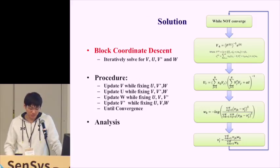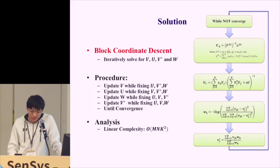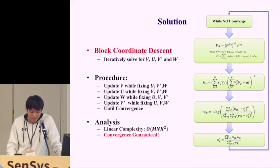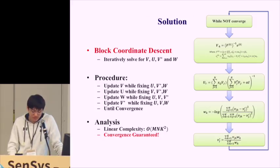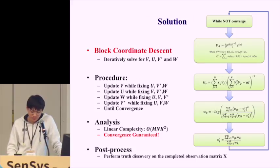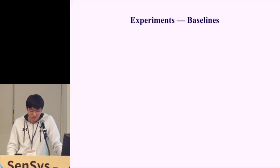On theoretical analysis: the algorithm is linear with respect to the number of users M and entities N. Although there is a K-squared term in the complexity, K is usually a very small number so it does not significantly affect the overall complexity. We can also prove that the proposed method is theoretically guaranteed to converge. After completing the observation matrix, we apply a post-processing truth discovery step to derive the values for each entity.